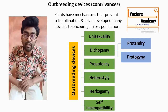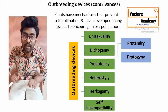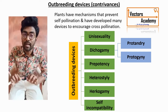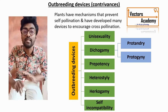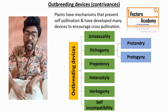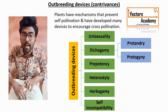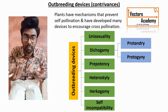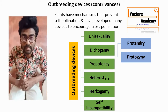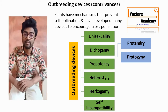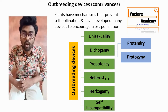The sixth outbreeding device is self-sterility or self-incompatibility. Self-sterility is the only genetic mechanism due to which the germination of the pollen grain on the stigma of the same flower is inhibited. As germination will not take place, the pollen grain will not deposit on the stigma, and since pollination will not take place, there is no fertilization. The best examples for self-sterility are tobacco and potato.